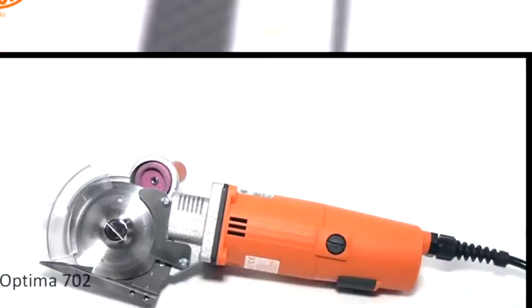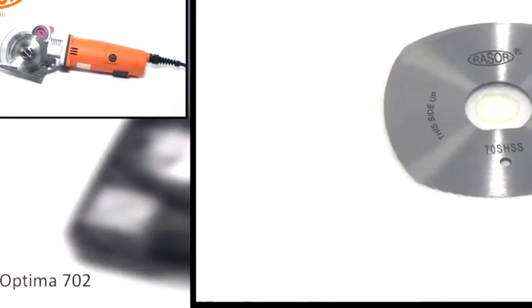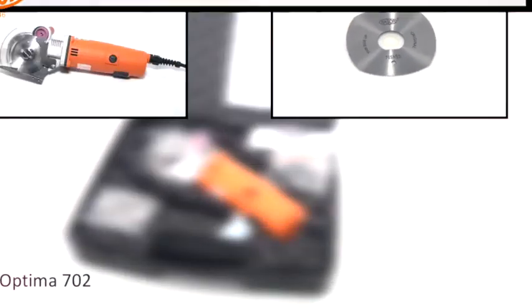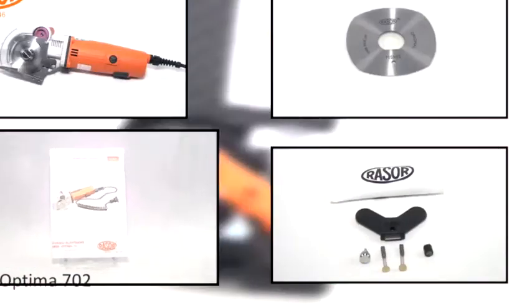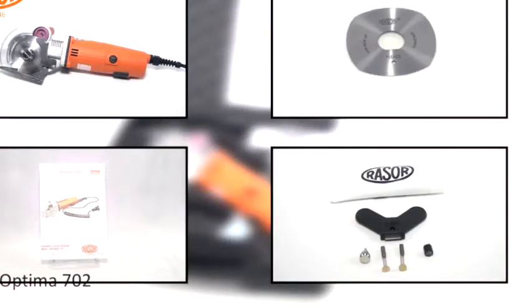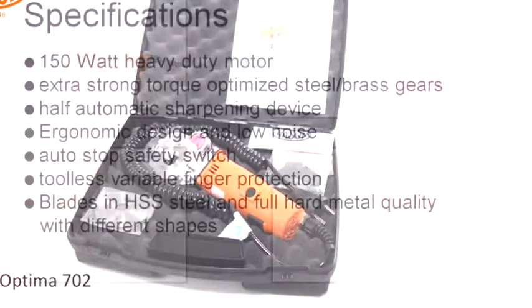The delivery contains the Optima 702, an extra blade, accessories, and a manual in five languages.